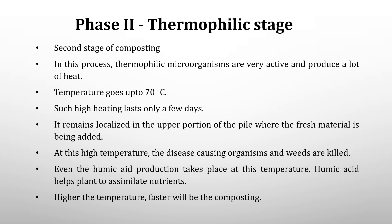In the thermophilic stage — the second stage of composting — thermophilic microorganisms are very active and produce a lot of heat. Temperature goes up to 70 degrees Celsius, but such high heating lasts only a few days and remains localized in the upper portion of the pile where fresh material is being added. At this high temperature, disease-causing organisms and weeds are killed, and humic acid production also takes place. Humic acid helps plants to assimilate nutrients. Higher the temperature, faster will be the composting.